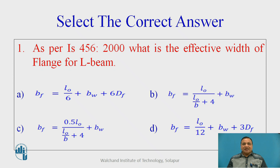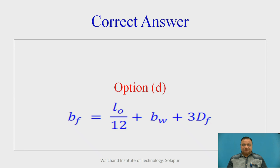This is select a correct answer from the four choices given. You please pause the video and think as per IS456, what is the effective width of flange for L-beam. The correct answer is option D, that is Bf equals L0 by 12 plus Bw plus 3Df.